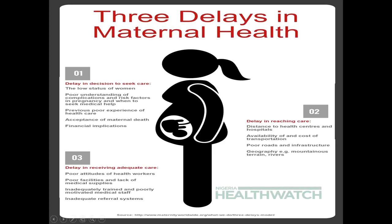The third delay is receiving adequate care. Even after reaching the health care center, the attitude of health workers may not be right, there may be poor facilities, lack of equipment, unavailability of incubators or cesarean section services, and medical staff not properly trained or ready to care for referred patients. These are the three delays in the maternal health model: delay in decision to seek care, delay in transportation, and delay in receiving adequate care after reaching the healthcare facility.